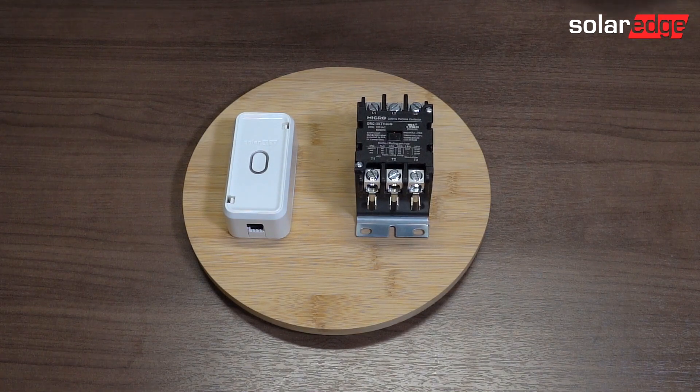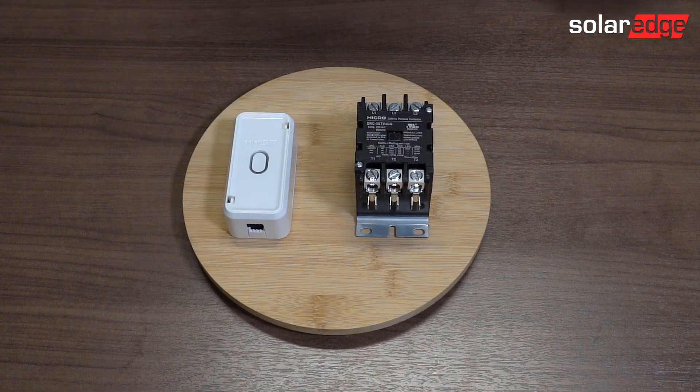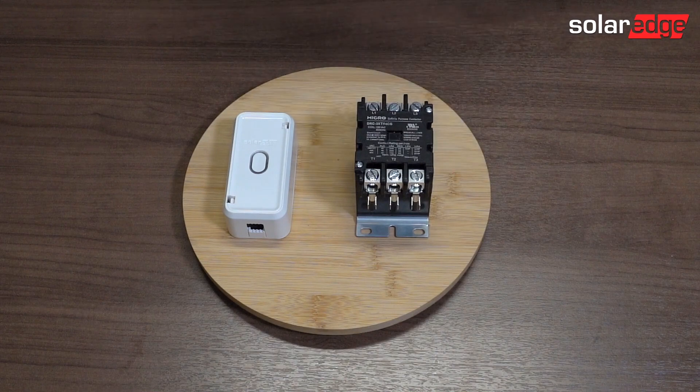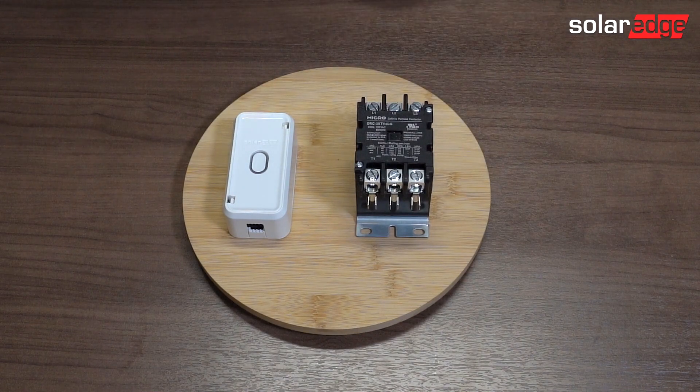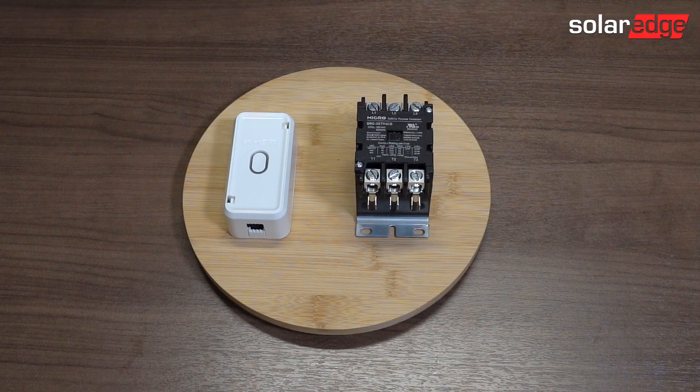And today we're going to wire a SolarEdge load controller to a three-pole contactor with a 120 volt coil.